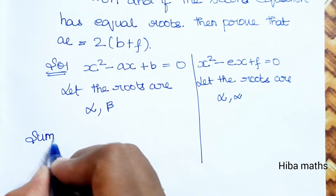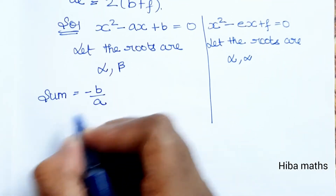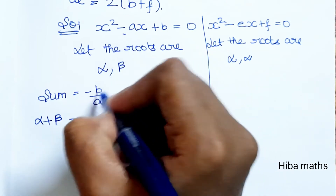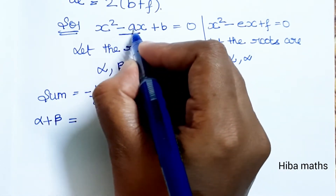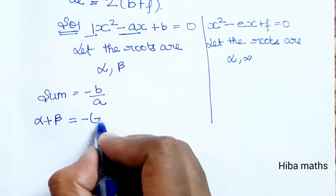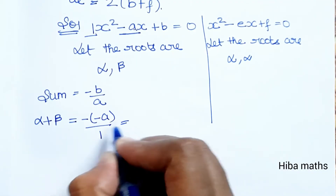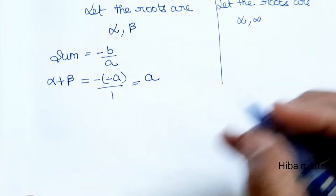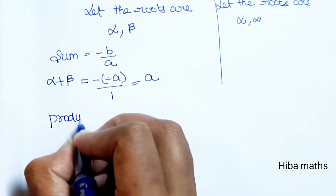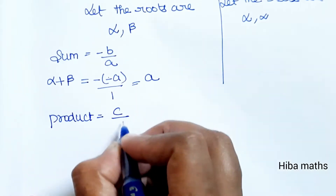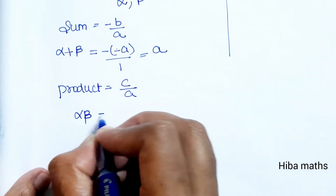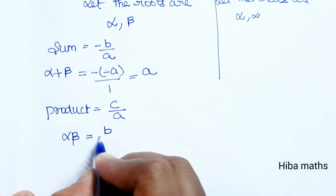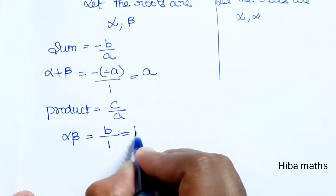For the first equation x² - ax + b = 0: the sum of roots alpha + beta equals a, and the product of roots alpha × beta equals b.